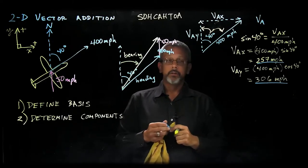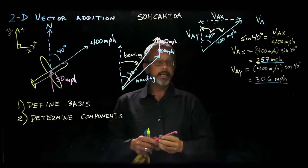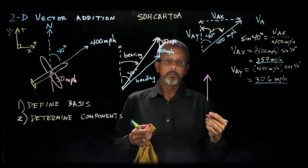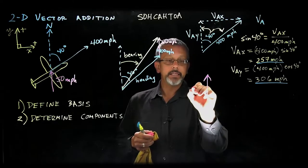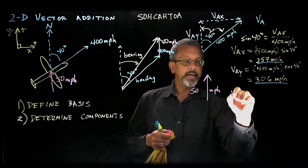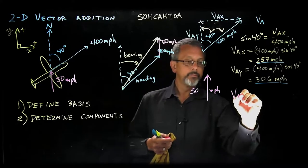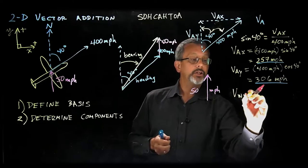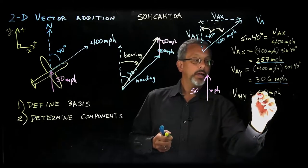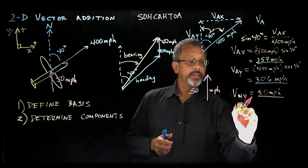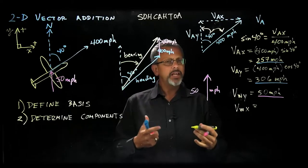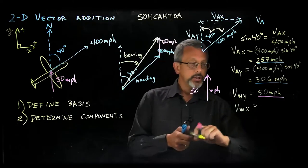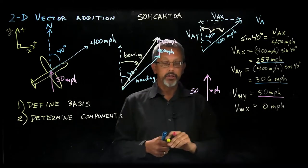Now let's apply the same process to the wind speed vector. This one is much simpler — the wind speed vector is already aligned with our y-axis, which may indicate it was a smart choice of basis. The velocity of the wind speed in the y-direction is simply 50 miles per hour. The velocity of the wind speed in the x-direction is zero miles per hour, since there is no motion in the x-direction.